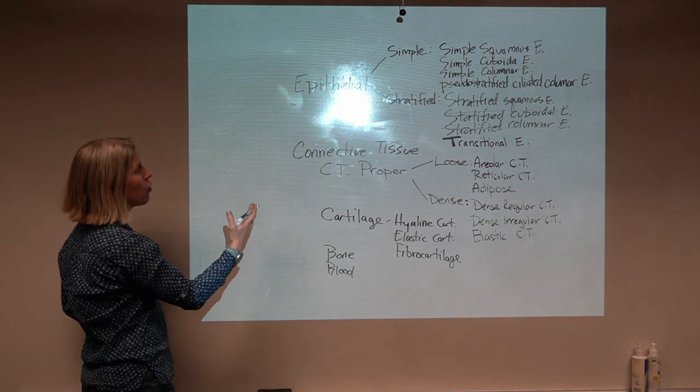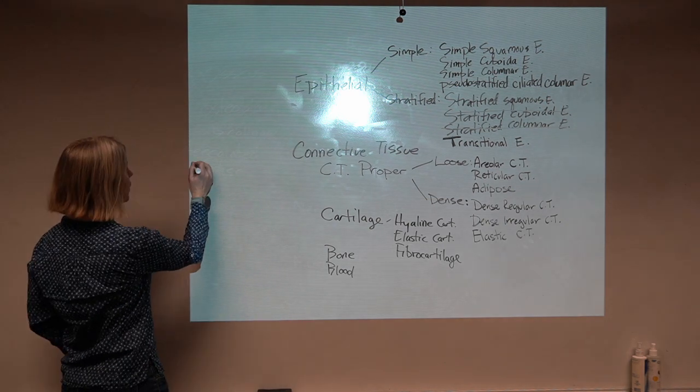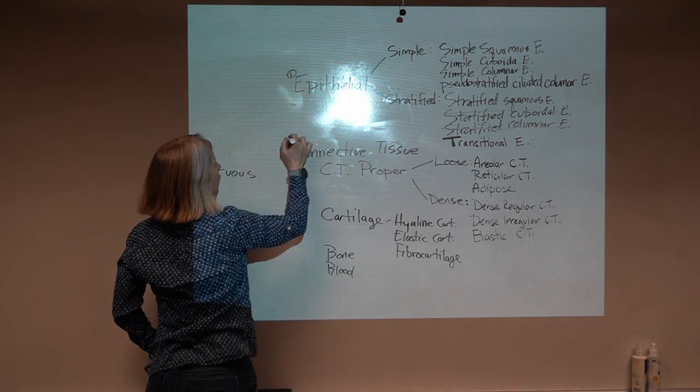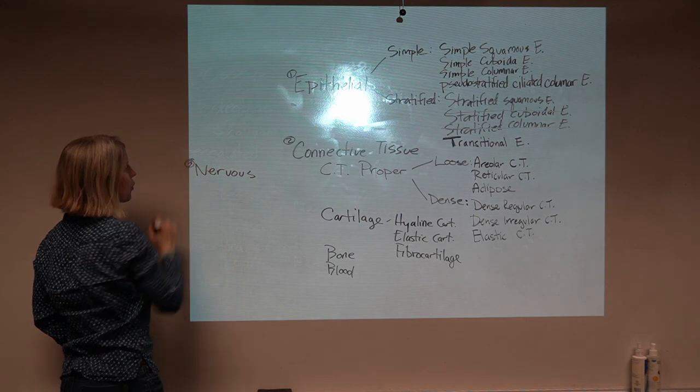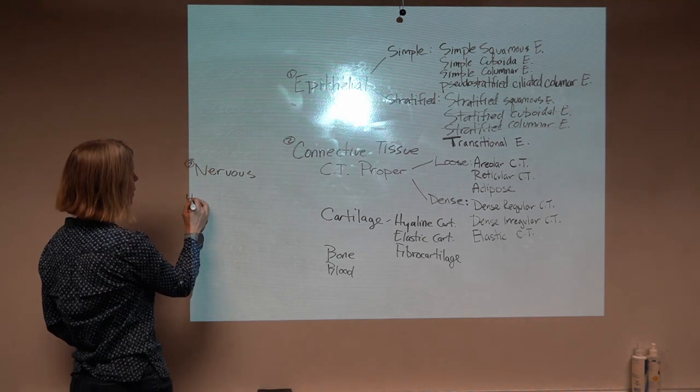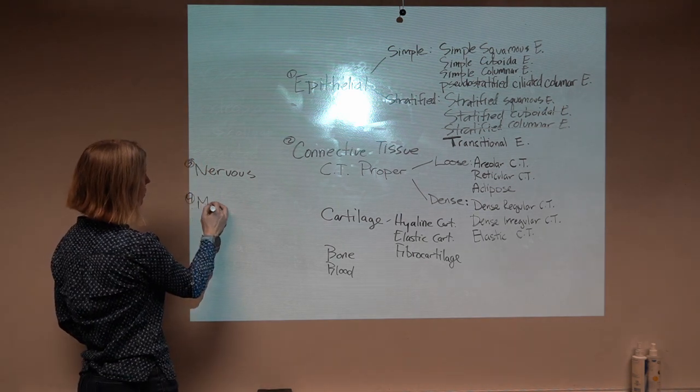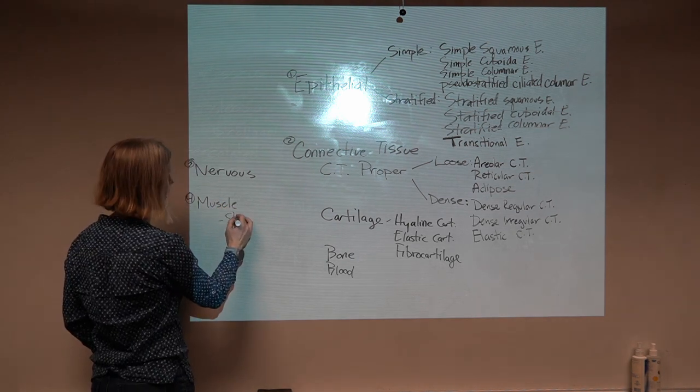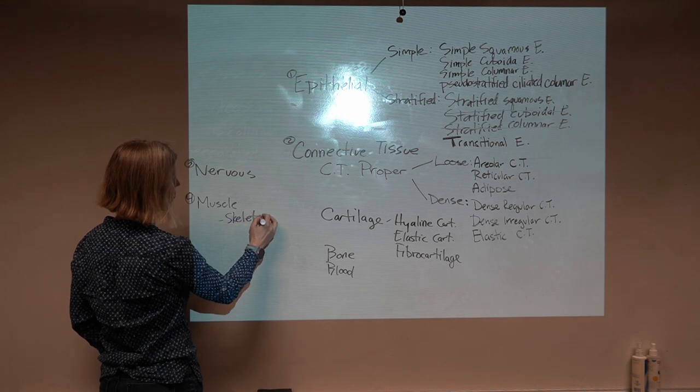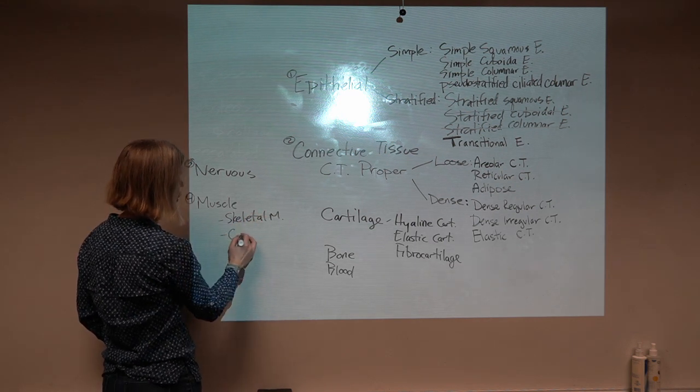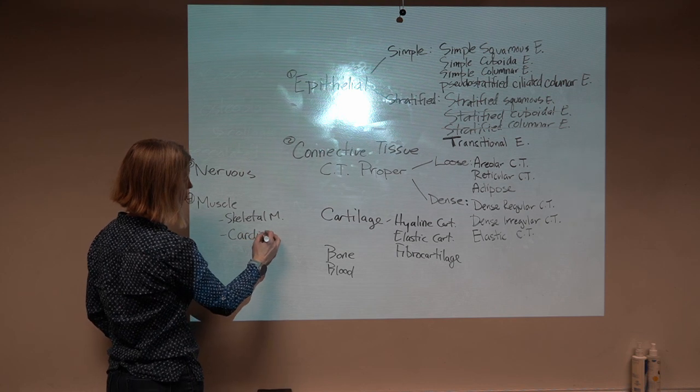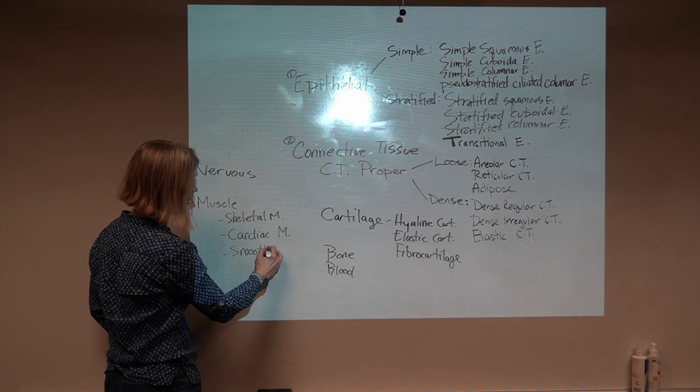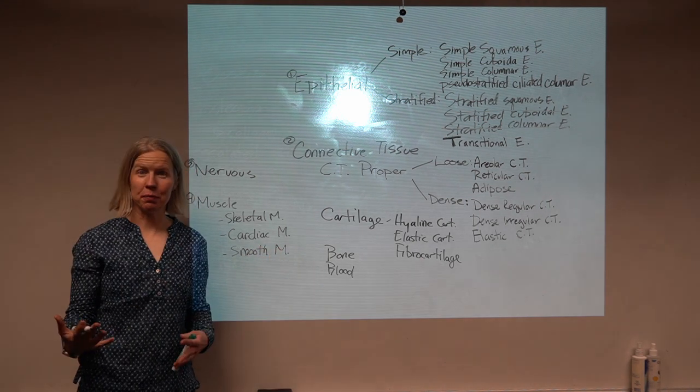We move on. We had nervous tissue. Nervous tissue and muscle. And there were three types of muscle. We had skeletal muscle, cardiac muscle, and smooth muscle.